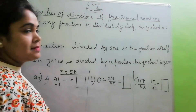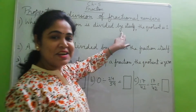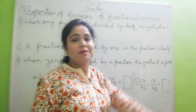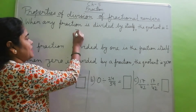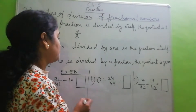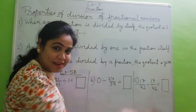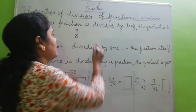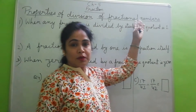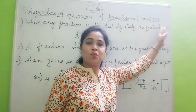First property is: when any fraction is divided by itself, the quotient is 1. Suppose I am taking any fraction 7 by 8, and I am dividing this by itself, means 7 by 8. The property is telling that the quotient is 1.